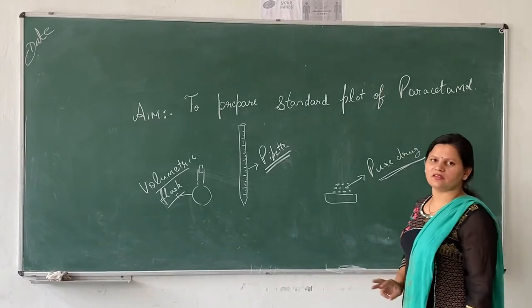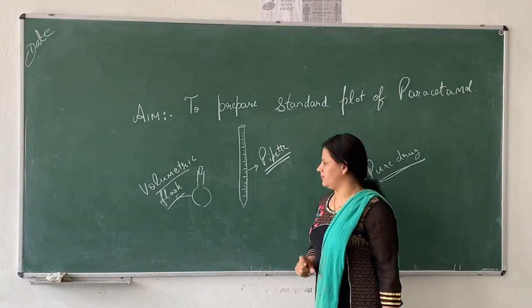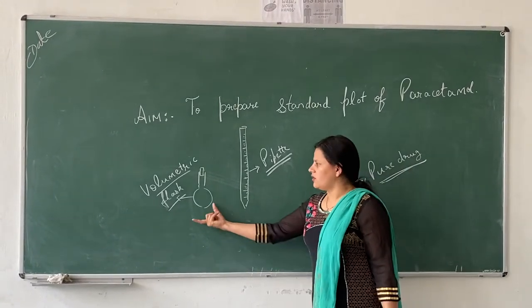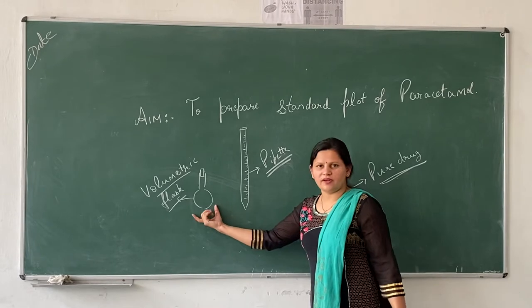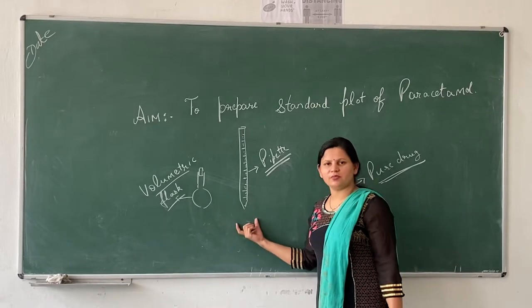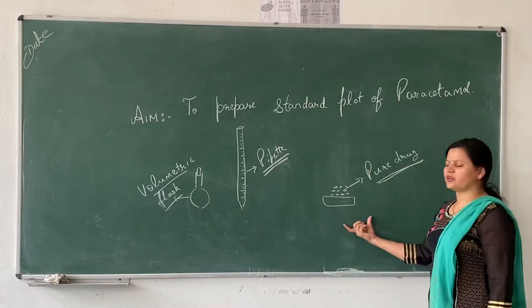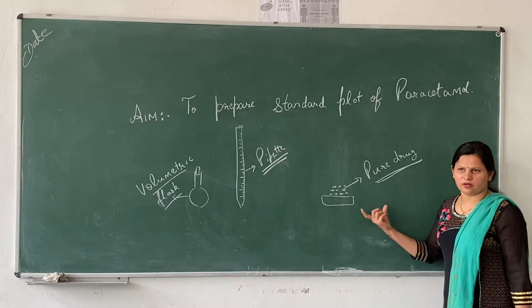We require three things for preparing the standard plot of paracetamol. First is the volumetric flask, second we require is pipette, and the third thing which we require is the pure drug.